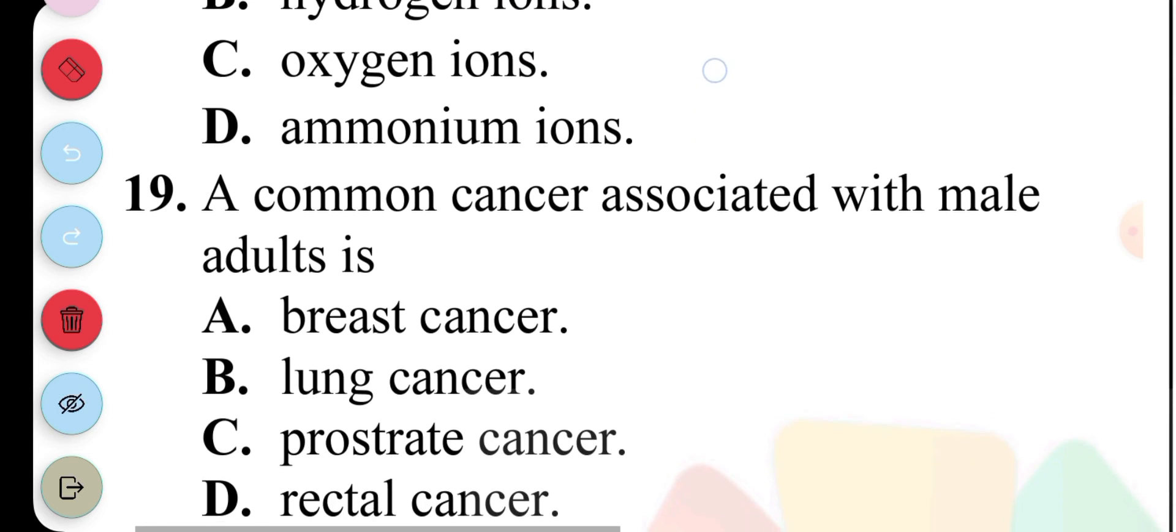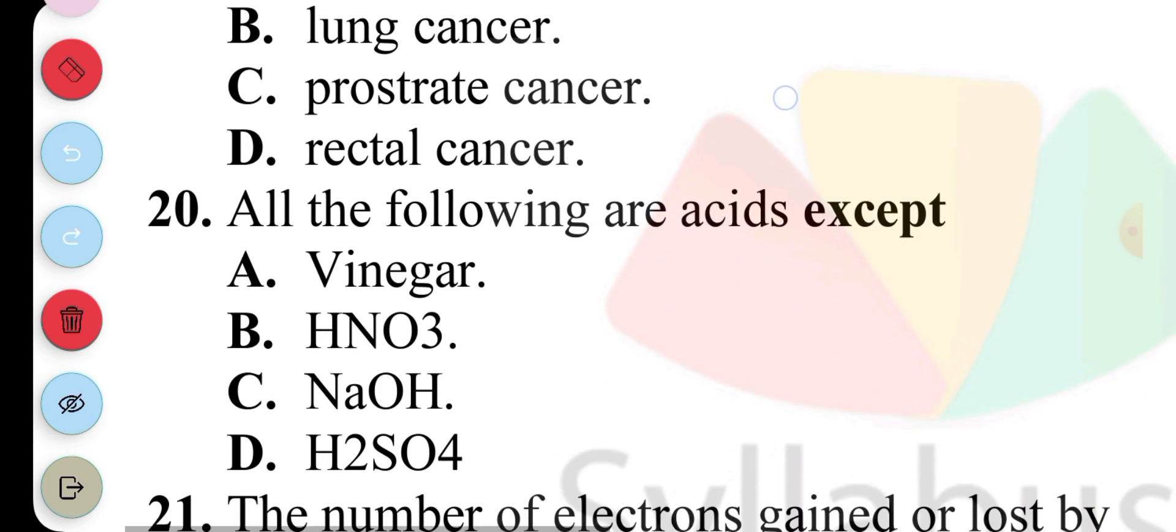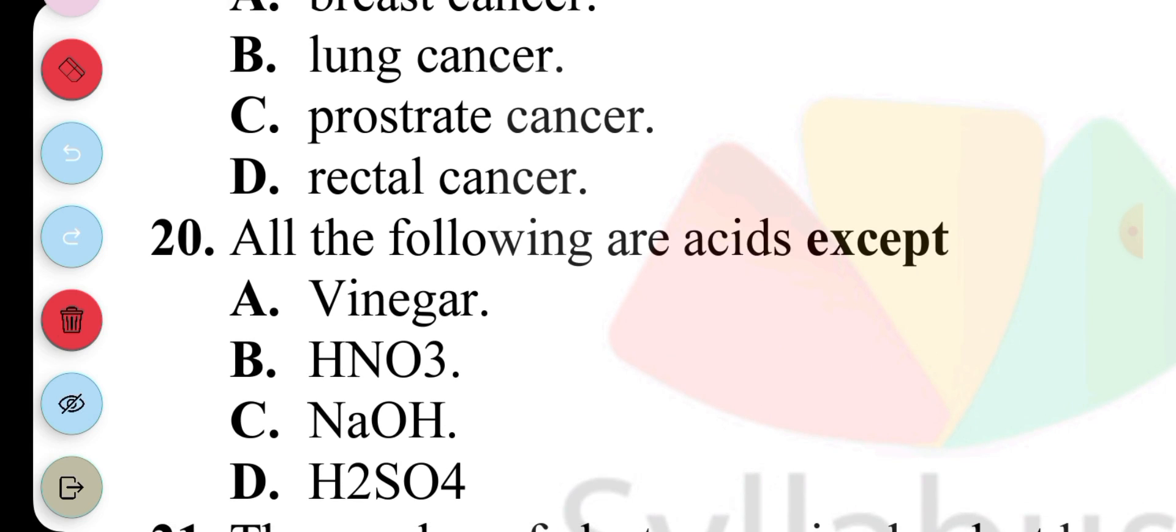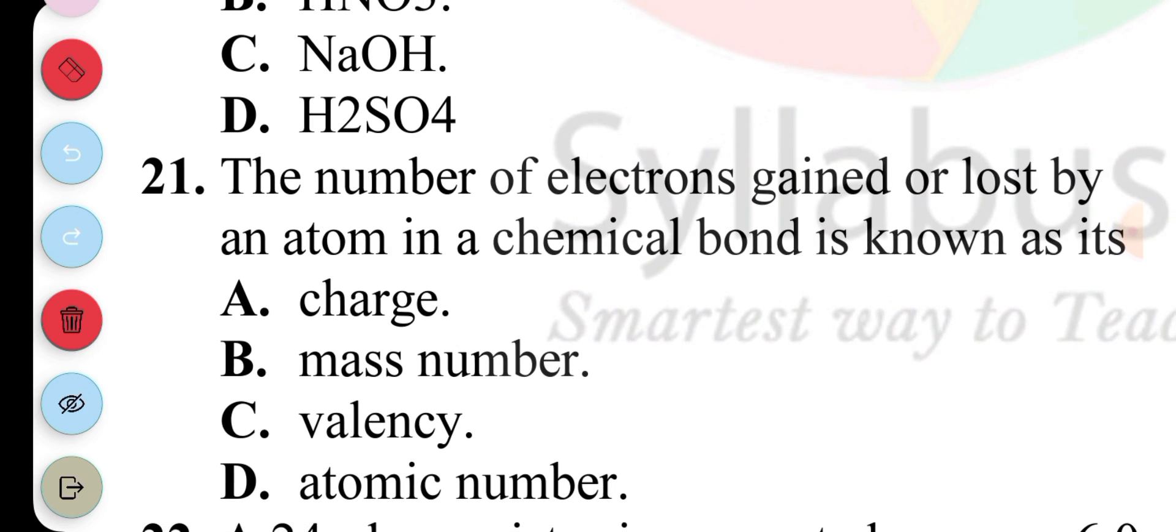Question 19: A common cancer associated with male adults is Prostate cancer. Question 20: All the following are acids except... So looking through, Sodium hydroxide, it's a base. Question 21: The number of electrons gained or lost by an atom in a chemical bond is known as its charge, mass number, valency, or atomic number. So question 21, the answer is C, valency.